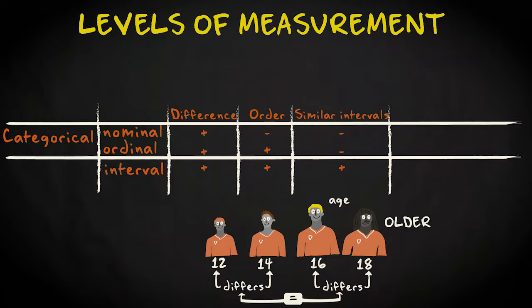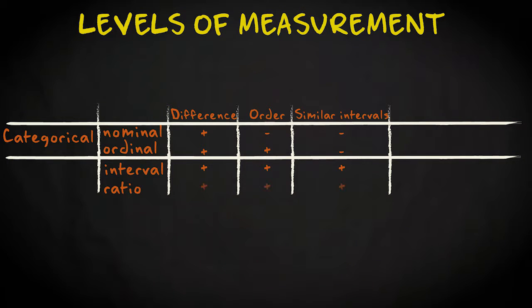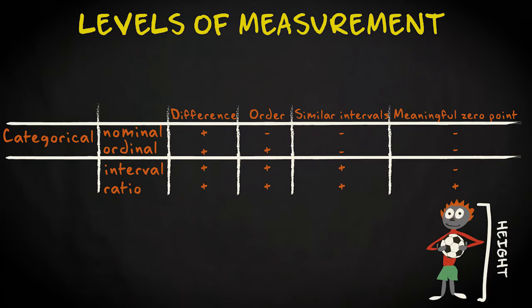The final level of measurement is the ratio level. It is similar to the interval level, but has, in addition, a meaningful zero point. An example is a player's body height, measured in centimeters. There are differences between the categories. There is an order, there are similar intervals, and we have a meaningful zero point. A height of zero centimeters means that there is no height at all. Note that we cannot say that age has a meaningful zero point, because an age of zero does not mean that there is no age. Age, therefore, is an interval variable.